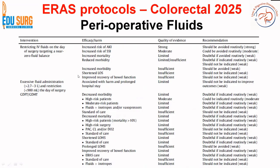When it comes to perioperative fluid management, the current recommendation is goal-directed fluid therapy or goal-directed hemodynamic therapy. It is supposed to decrease morbidity especially in high-risk patients. A slightly positive fluid balance is the current recommendation. Restricting IV fluids excessively increases the risk of AKI (acute kidney injury) as well as surgical site infections — avoiding a restrictive fluid policy is a strong recommendation. The approach is to monitor parameters of good hydration and keep the fluid balance slightly positive rather than negative.